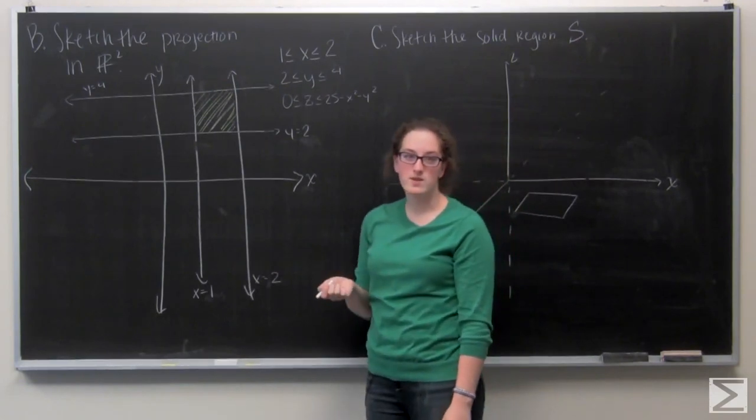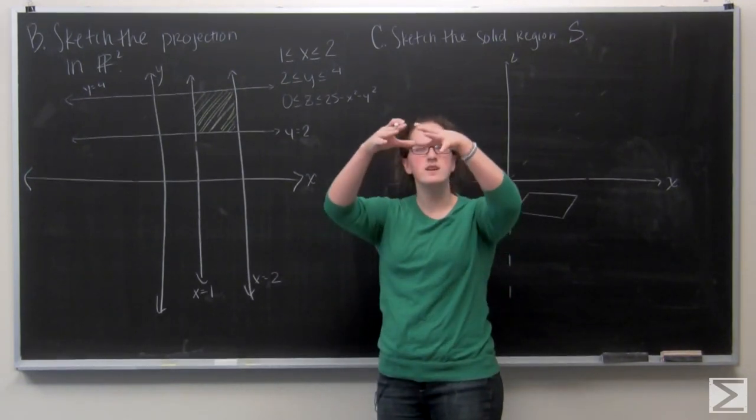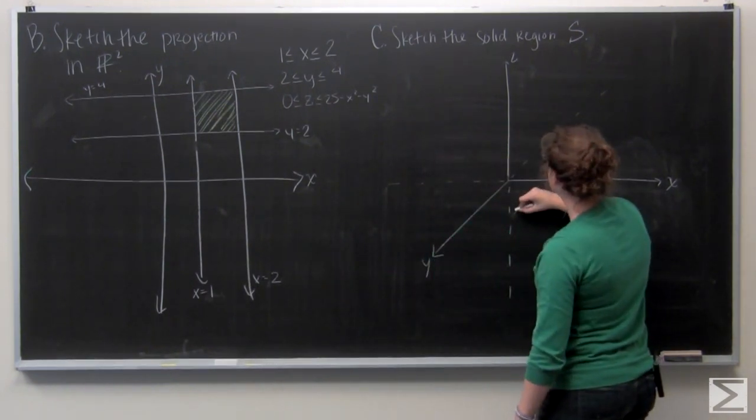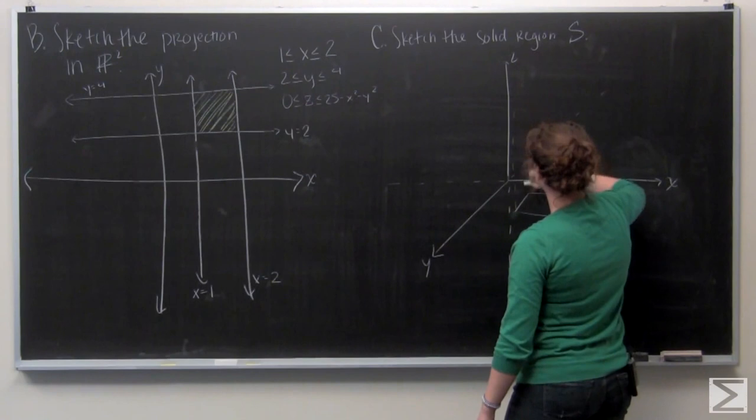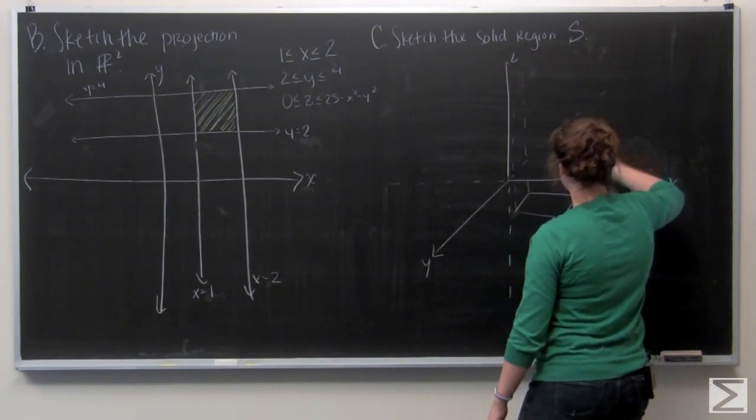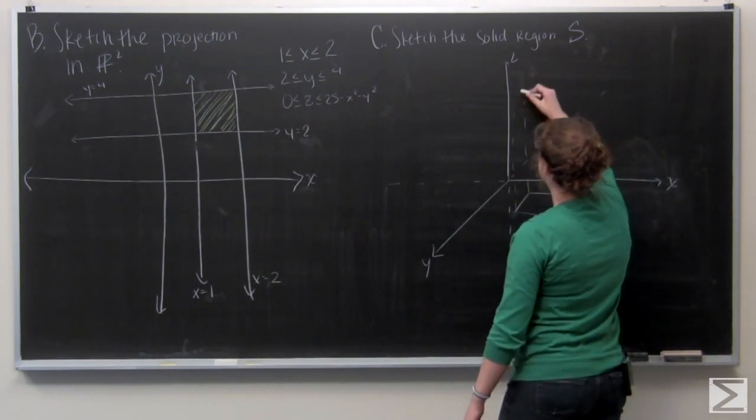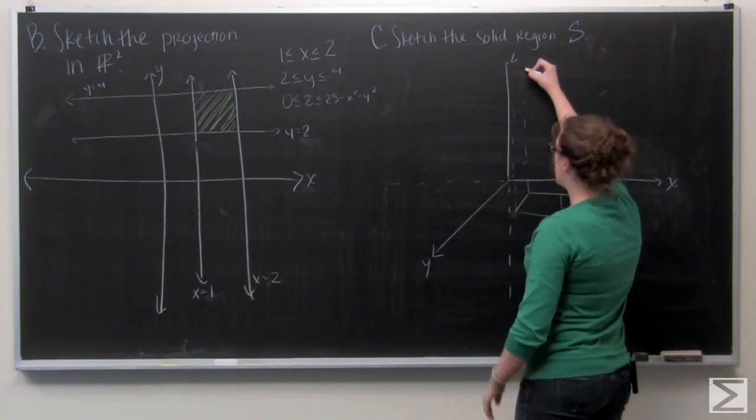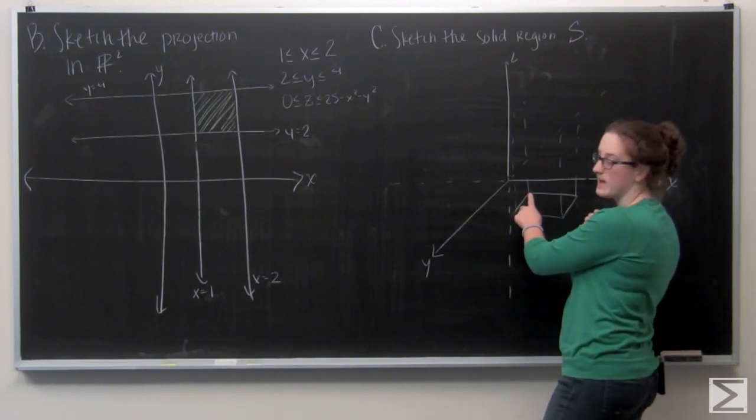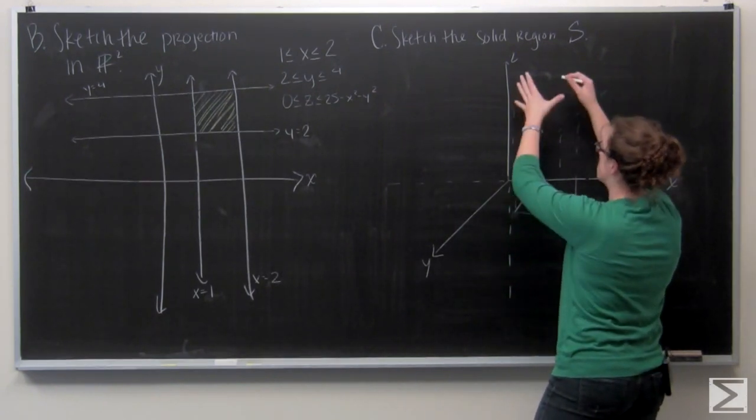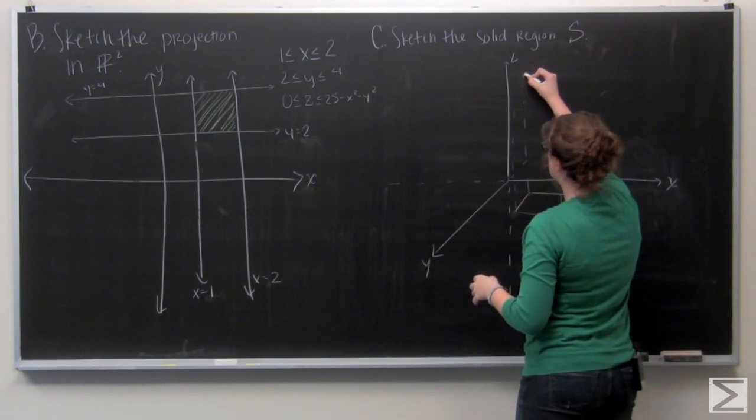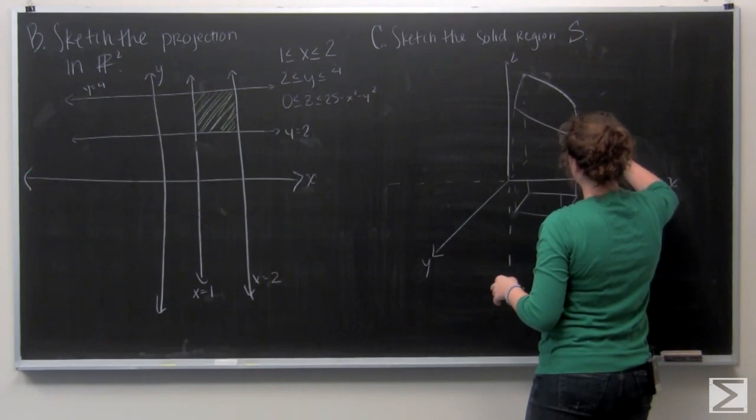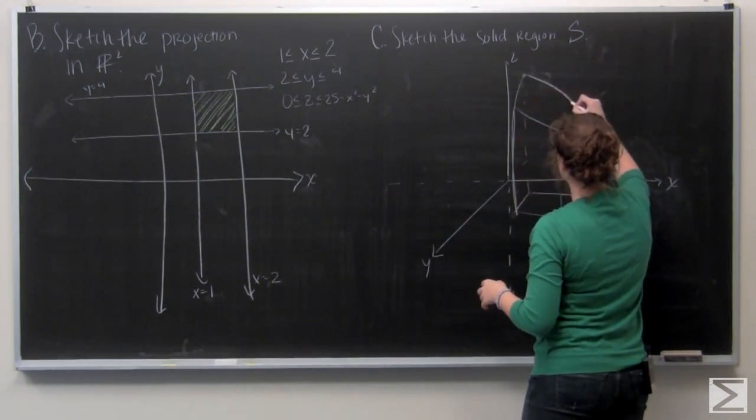25 minus x squared minus y squared is a paraboloid. It looks kind of like an upside down bowl. I'm going to draw my lines up to kind of get a rough idea. The peak of this paraboloid is going to be on the z axis. We're going to have a high point at this back vertice of the rectangle and then it will come down. Something like that.